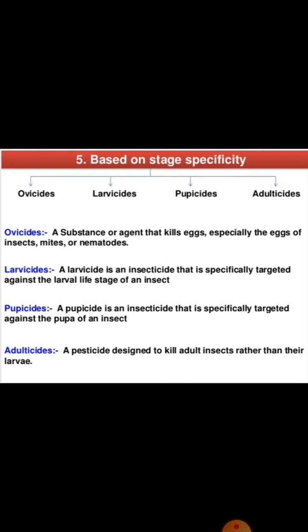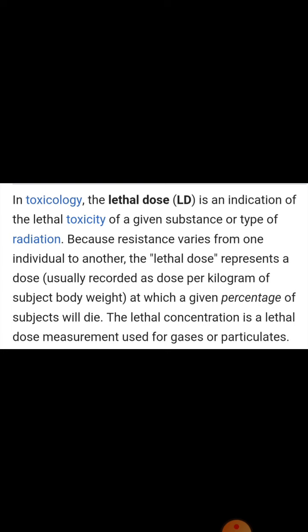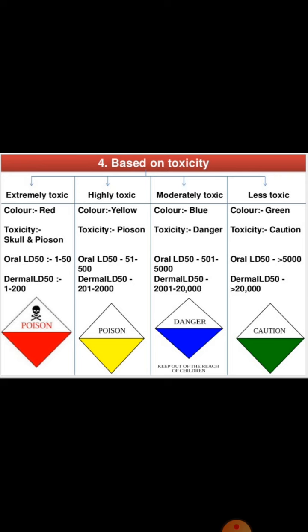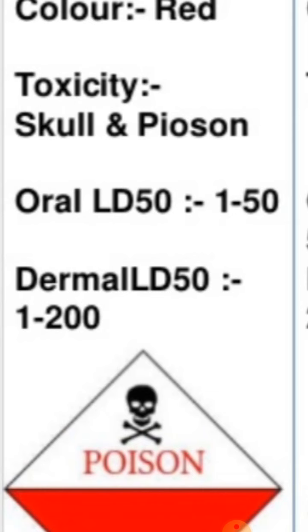Next is lethal dose. In toxicology, lethal dose is an indicator of the lethal toxicity of a given substance. As seen in the table, based on toxicity — whether extremely toxic, highly toxic, moderately toxic, or less toxic — the lethal dose is designated by LD. This includes oral LD and dermal LD.